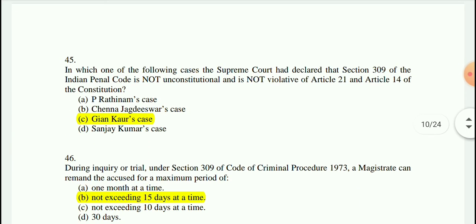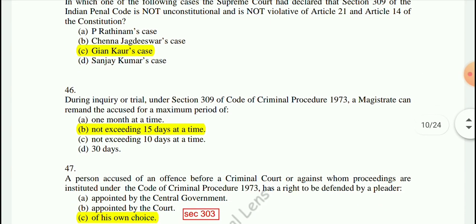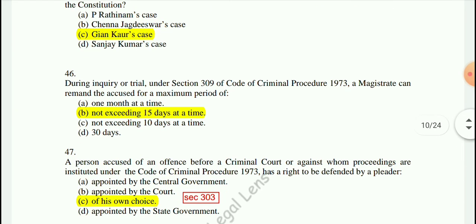Question 45: In which case did the Supreme Court declare that Section 309 of the Indian Penal Code is not unconstitutional and not violative of Articles 21 and 14 of the Constitution? The answer is Gyan Kaur.